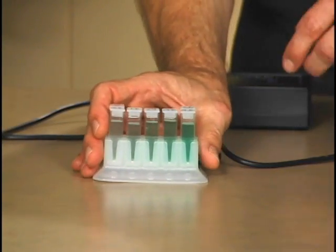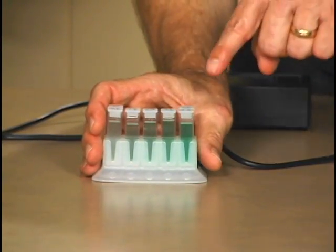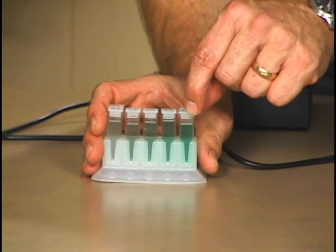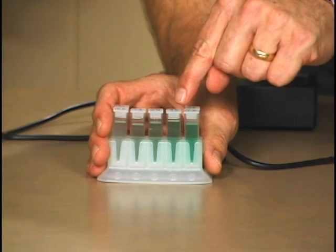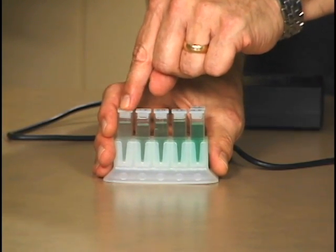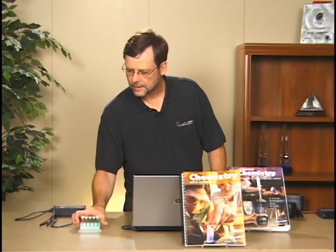The students would have already prepared the standard solutions, starting with a 0.40 molar solution. They would have done a series of dilutions by four-fifths, three-fifths, two-fifths, and one-fifth, respectively. So a student would have already done that particular step.